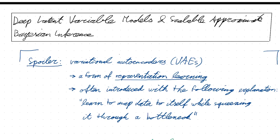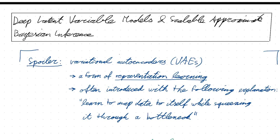This brings us to today's topic of deep latent variable models and scalable approximate Bayesian inference. This video will derive a fairly involved series of modern methods for probabilistic machine learning. To give you an idea of where all these derivations will lead, let me start with a brief spoiler: what we will derive at the end of this video will be the concept of variational autoencoders. These are probabilistic machine learning methods that are a form of representation learning — you have some data and you want to map it to some semantic representation space that captures important features of that data.